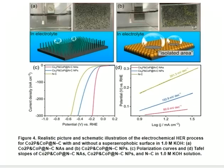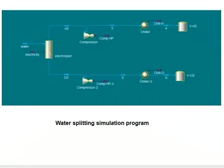This picture shows a realistic image and schematic illustration of the electrochemical HER process for cobalt phosphide with and without a superhydrophobic surface in 1 mol/L KOH. The next picture is a water-splitting simulation program.